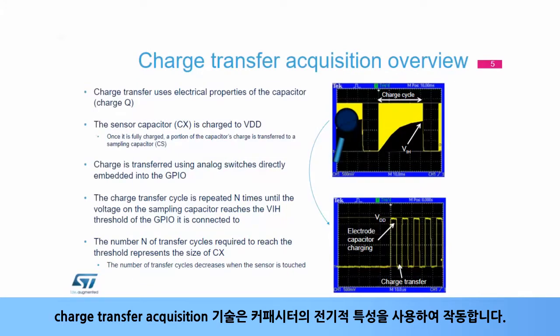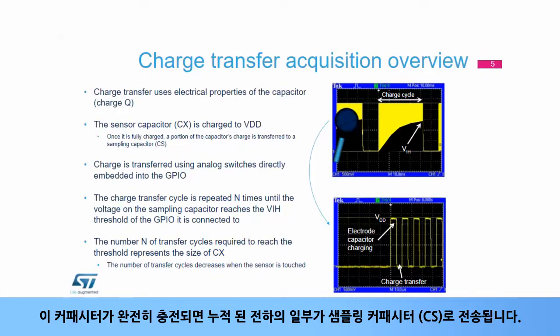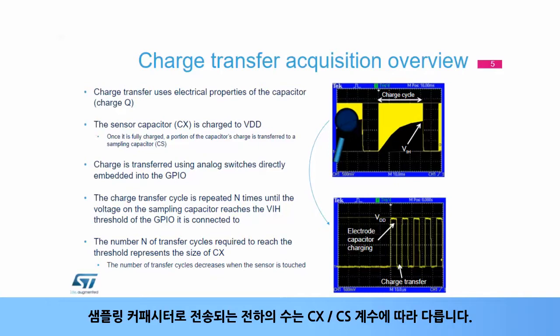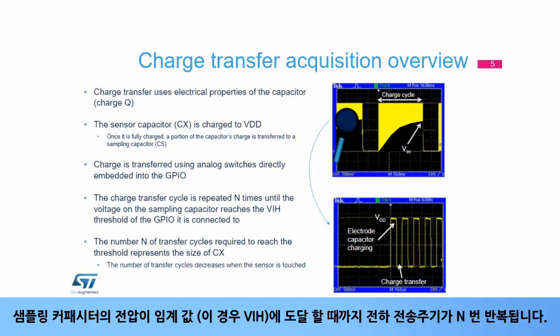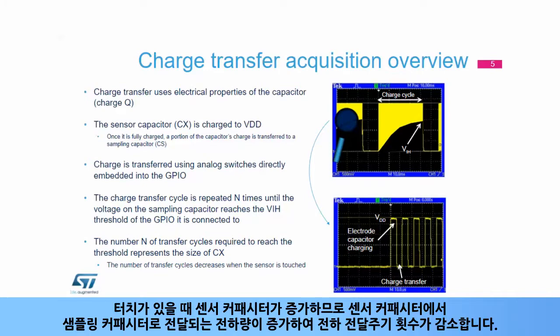The charge transfer acquisition technique works using the electrical properties of the capacitor. It consists of charging the sensor capacitor CX to VDD. Once fully charged, a part of the accumulated charge is transferred into sampling capacitor CS. The number of charges transferred depends on the factor CX divided by CS. The charge transfer cycle is repeated n times until the voltage on the sampling capacitor reaches a threshold VIH. The number n represents the size of CX. When there is a touch, the sensor capacitor is increased, and thus the amount of charge transferred is higher, leading to a decrease in the number of charge transfer cycles.